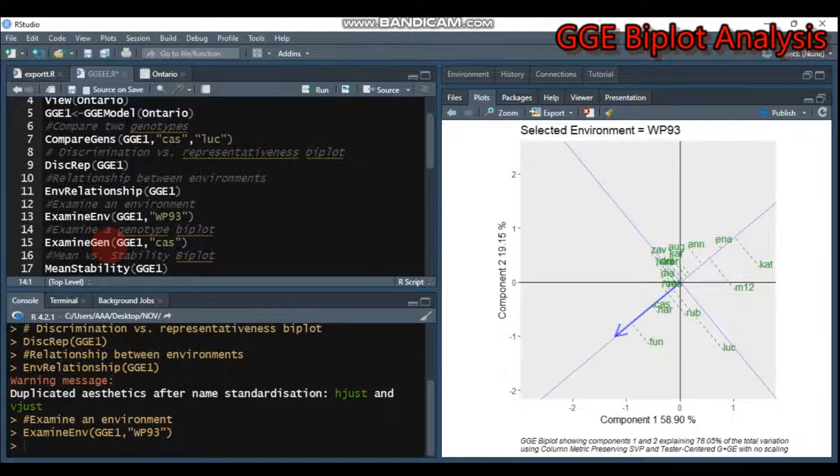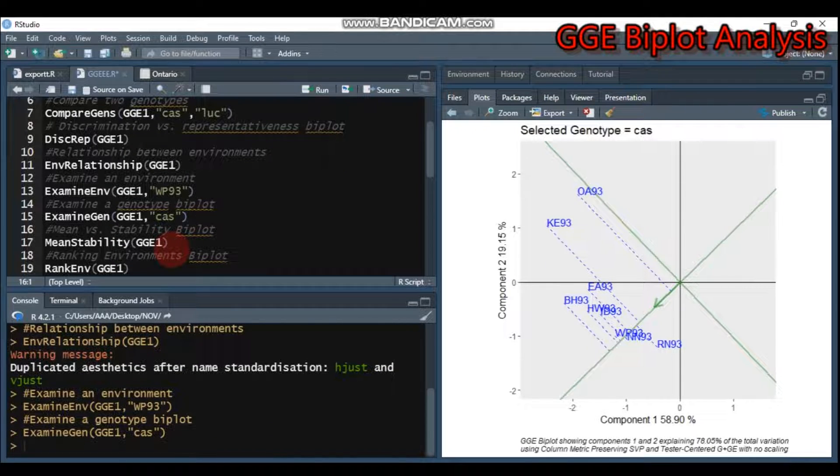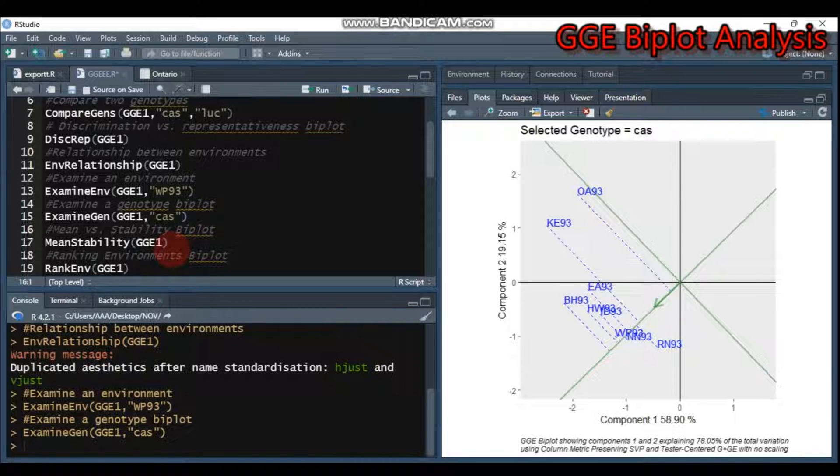You can also examine a genotype by simply using examine.gene instead of examine.env. Specify which genotype you are going to examine - is it CAST or LUC, or whatever, depending on your genotype name. In this tutorial, I want to examine CAST. Type this and send to R Studio, and the selected genotype CAST will display such a biplot.